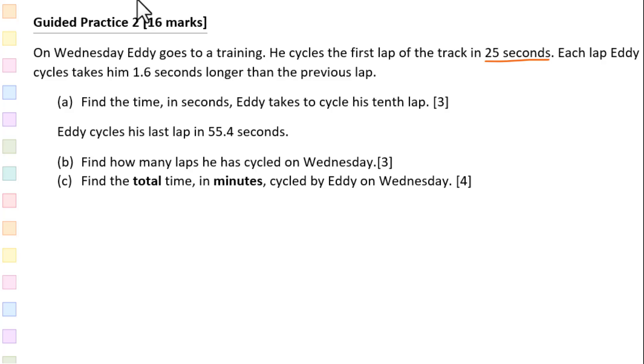Since each lap Eddie cycles takes him 1.6 seconds longer, it means the first lap is 25 seconds. Second is 25 plus 1.6. Third is 25 plus 1.6 times 2.